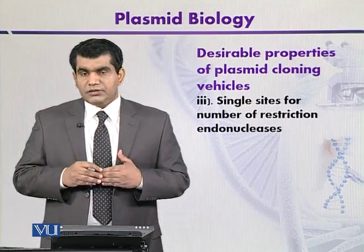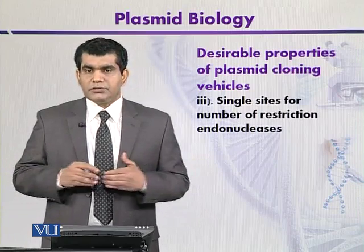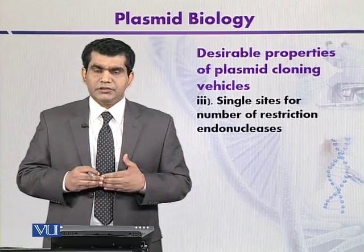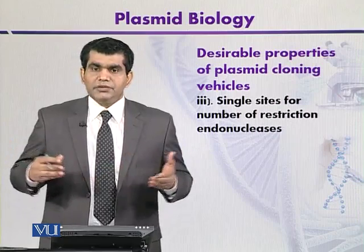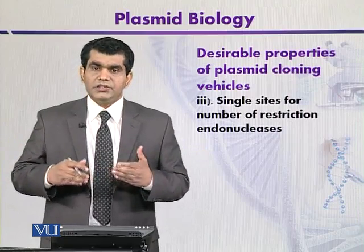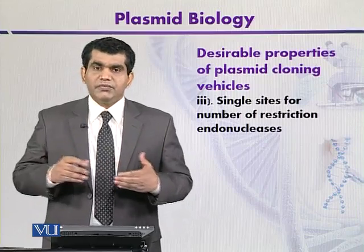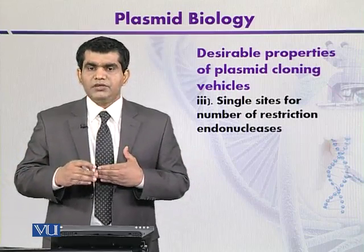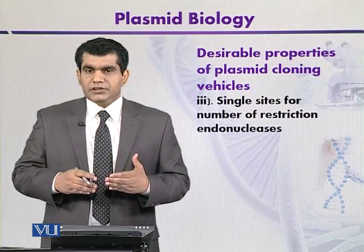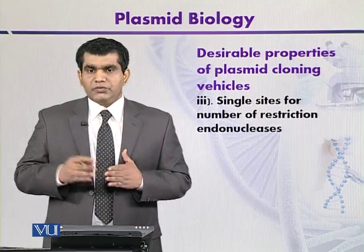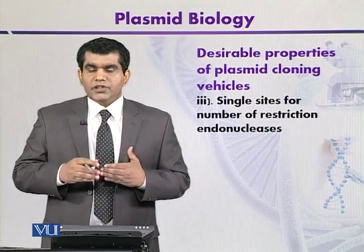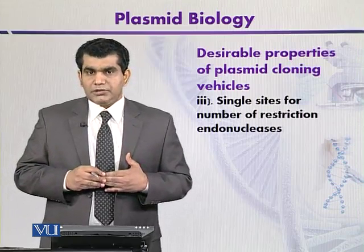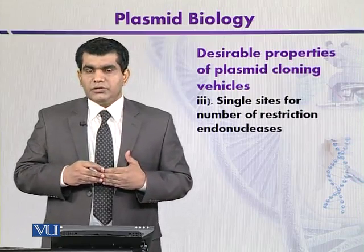Plasmids can harbor different types of traits, like antibiotic resistance, antibiotic production, metal resistance, and so on. Although these traits are not required for the survivability of the cell, when present, they can provide the cell a selective advantage over other microbes. One such trait — antibiotic resistance — is frequently used as a selectable marker in gene cloning procedures.